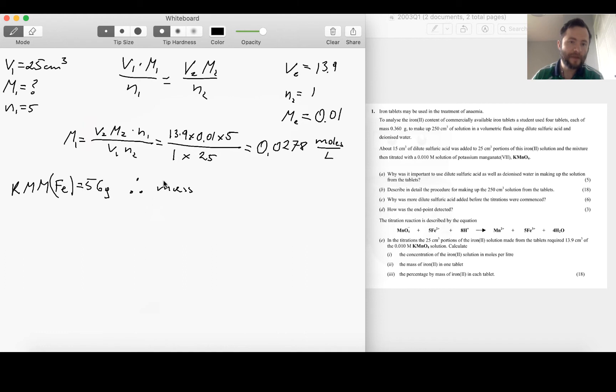And if that's the case, then mass of iron dissolved in this solution will be equal to 0.0278 times 56, and that's equal to 1.556 grams.